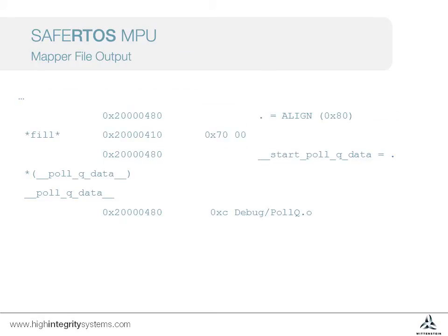This is an excerpt from the map file. The map file is created during the build process and is an output from the linker. This file contains a lot of information, much of which we can ignore. The most useful information in the context of MPUs is about how the program is placed in memory. Remember, both the flash and RAM are mapped within the 4GB address space. While at a first glance this information looks very cryptic, what is being presented is quite straightforward to understand. This column shows the addresses in memory space — in this case we are within the RAM region, which starts at hex 0x20000000.